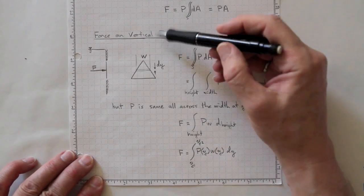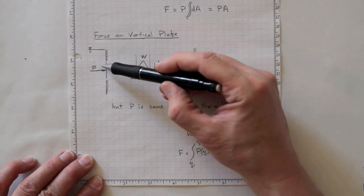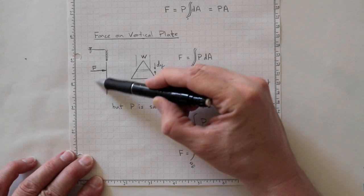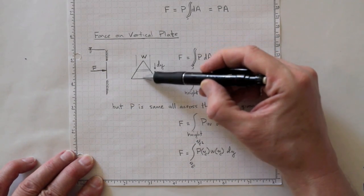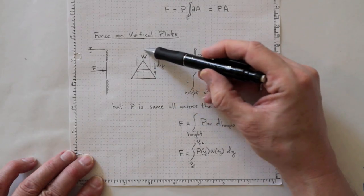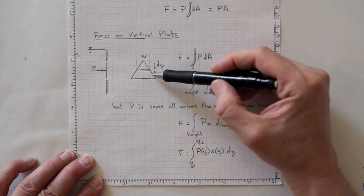On a vertical plate, it can be a little more complicated because the pressure varies as you go up and down. Pressure is lowest at the top of the plate and highest at the bottom of the plate, and the width of the plate may be varying.